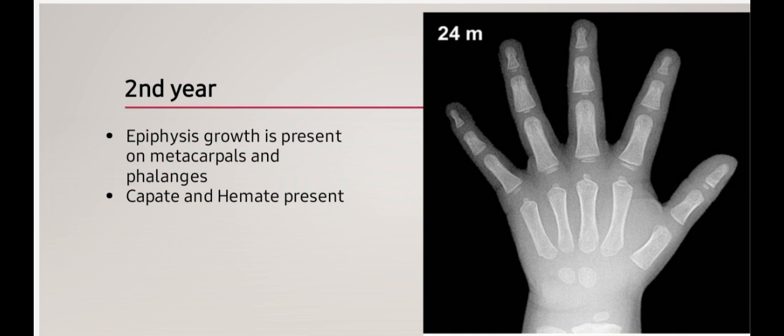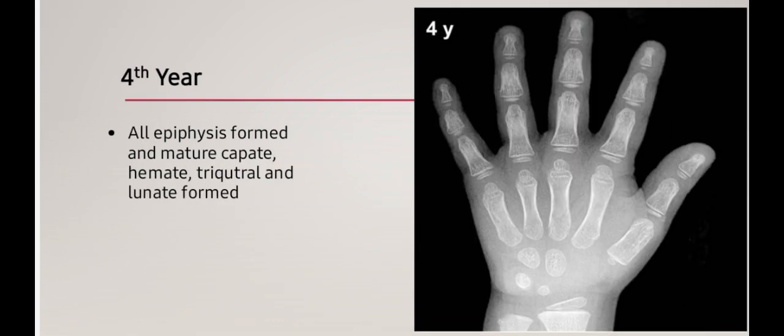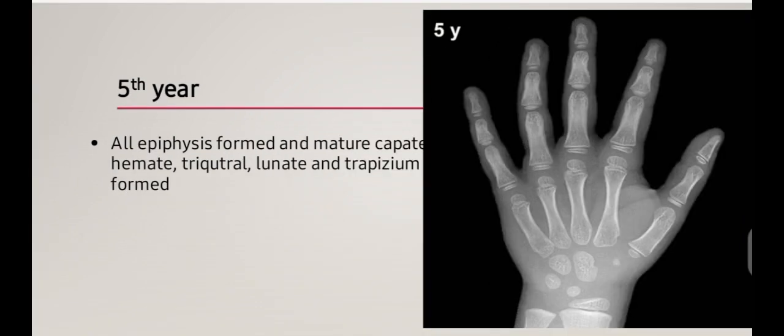In the third year of life, maturity of epiphysis is more pronounced over metacarpal and phalangeal bones, along with capitate and hamate. An extra carpal bone, triquetral, is also present, and the radial epiphysis begins to appear. In the fourth year of age, the extra carpal bone lunate forms, along with capitate, hamate, and triquetral.